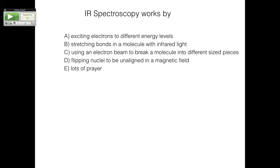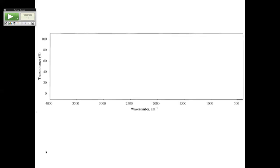What is A? UV-Vis — UV-Vis is exciting electrons to different energy levels. Stretching bonds is IR. Using an electron beam to break molecules into different size pieces is mass spec, which we talked about today. Flipping nuclei is NMR. And E is all of the above.